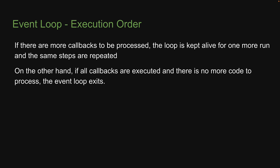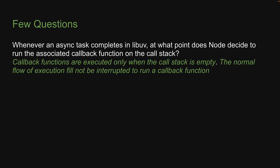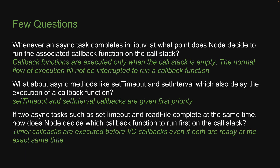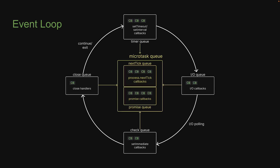This is the role libUV's event loop plays in the execution of async code in Node.js. We now have answers to the questions from earlier. For our first question: callback functions are executed only when the call stack is empty — the normal flow of execution will not be interrupted to run a callback function. For our second question: setTimeout and setInterval callbacks are given first priority. For the third question: timer callbacks are executed before IO callbacks, even if both are ready at the exact same time. Apart from this, we also learned about a few other queues that have their own priority. This visual representation is what I want you to imprint in your mind as it is how Node executes async code under the hood.